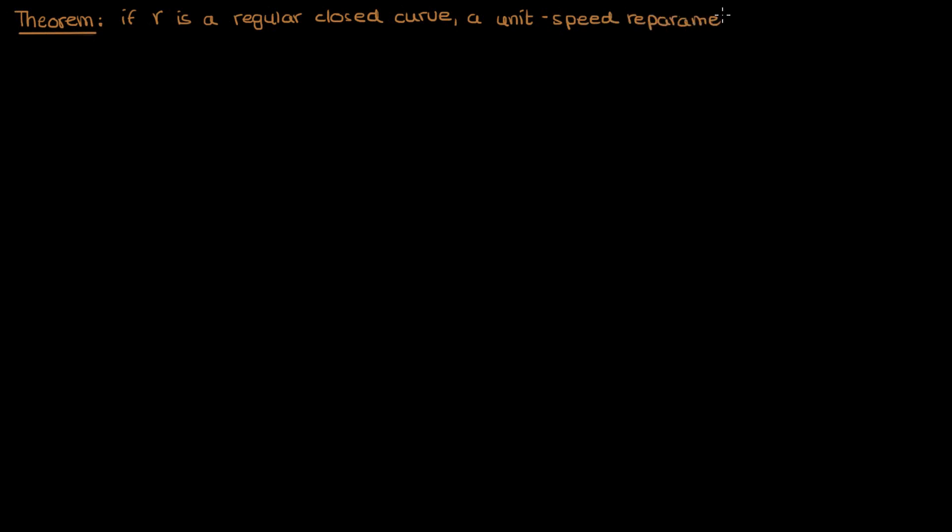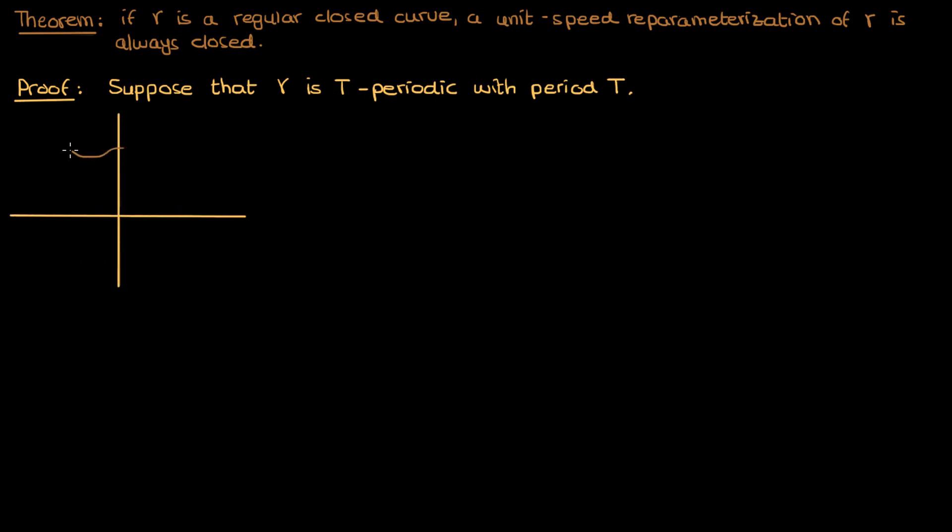This theorem states that if gamma is a regular closed curve, a unit speed reparametrization of gamma is also always closed. We'll start the proof by supposing that gamma is capital T periodic with a period of capital T. Since gamma is a closed curve, it might presumably look something like this.